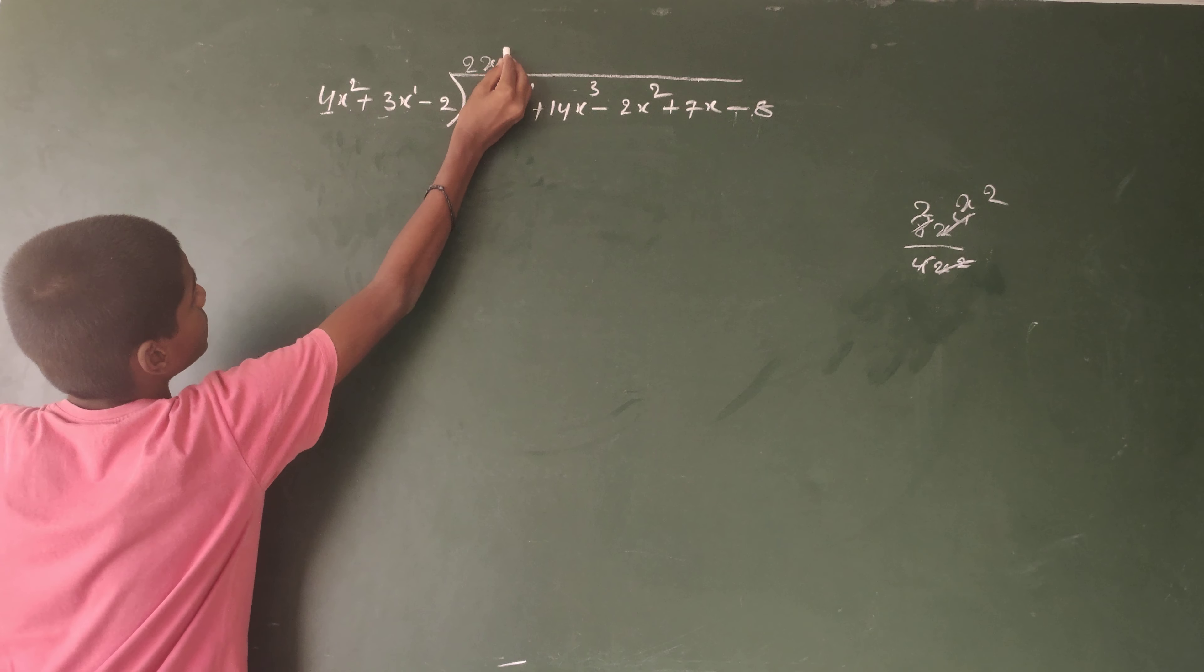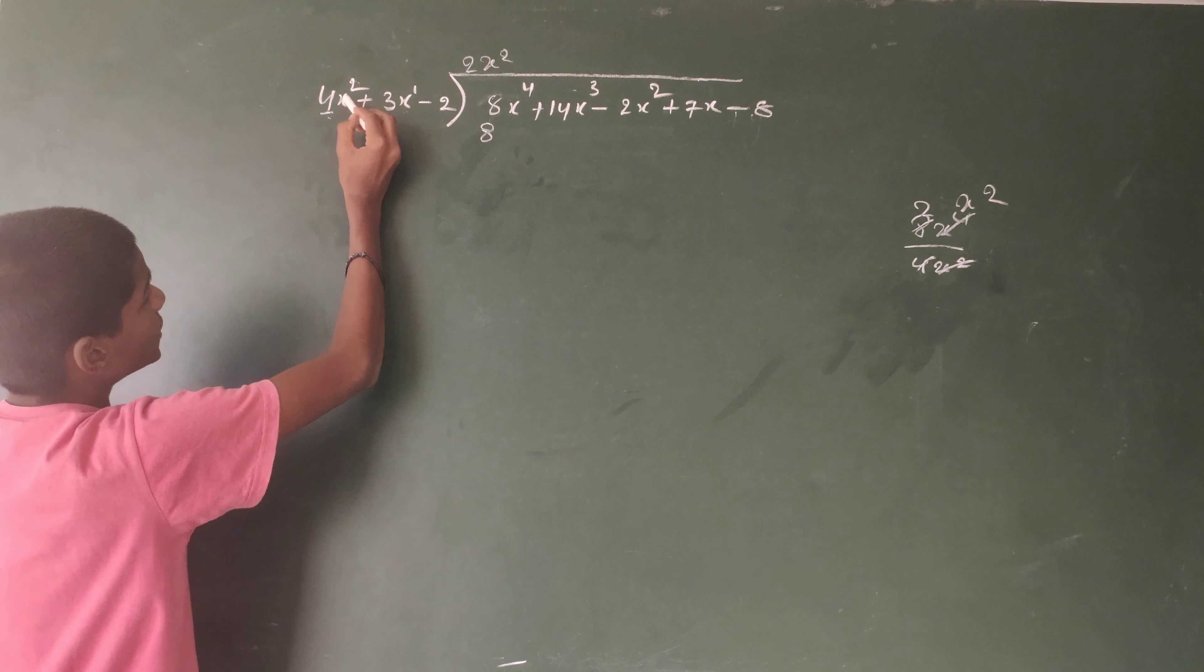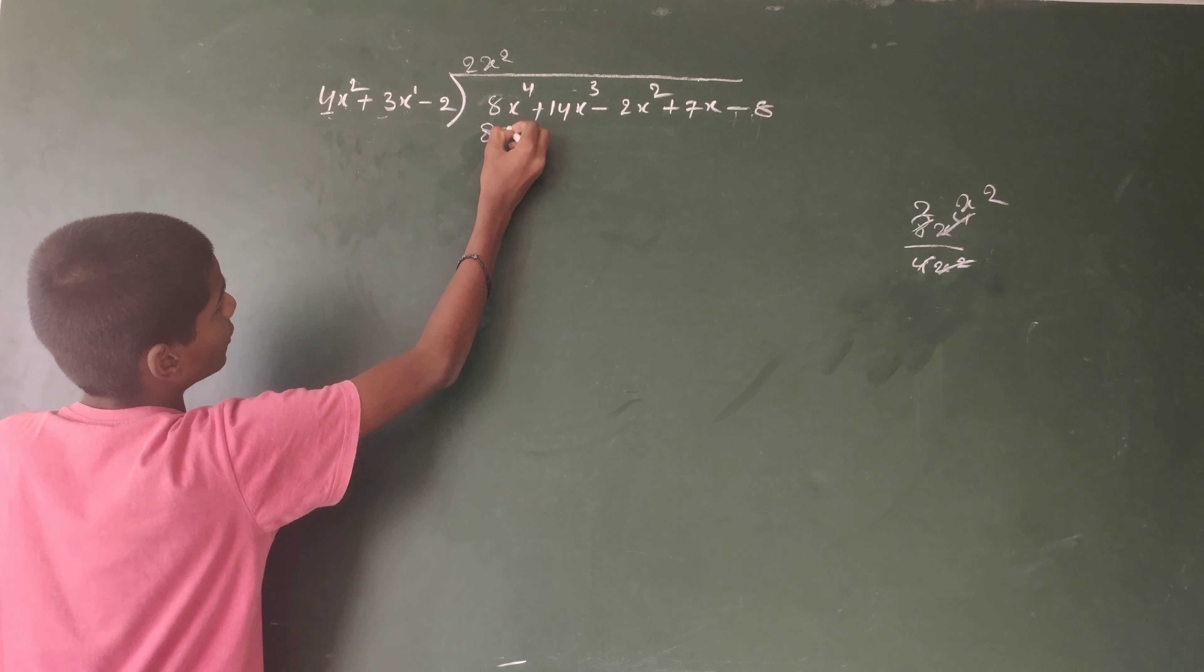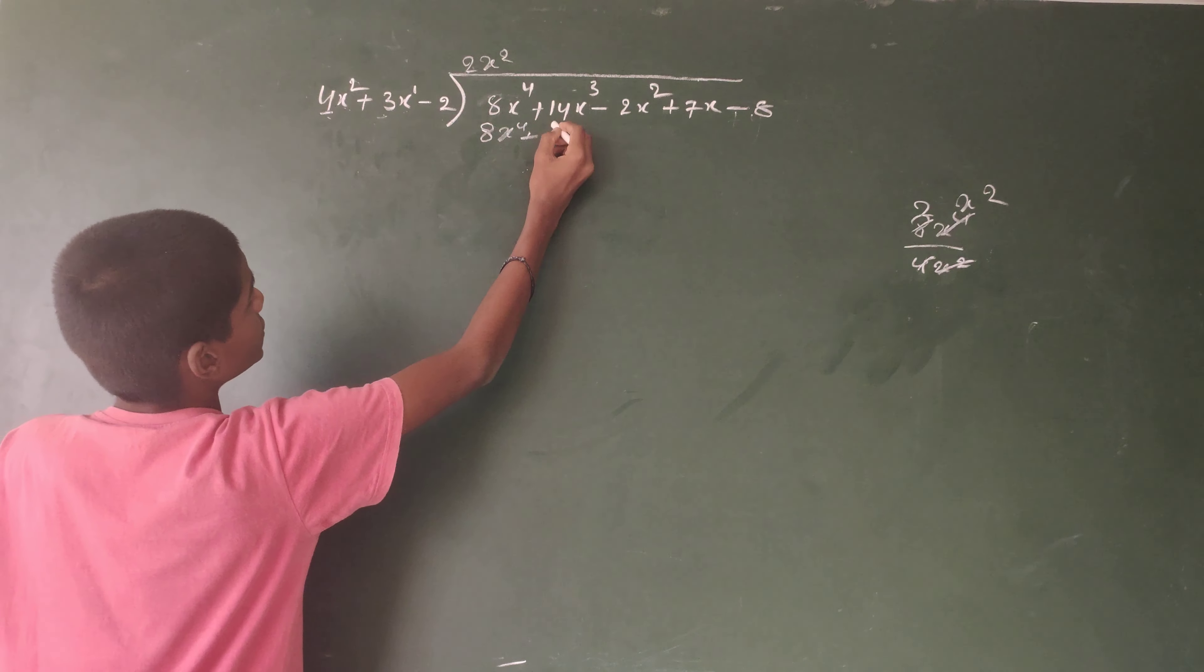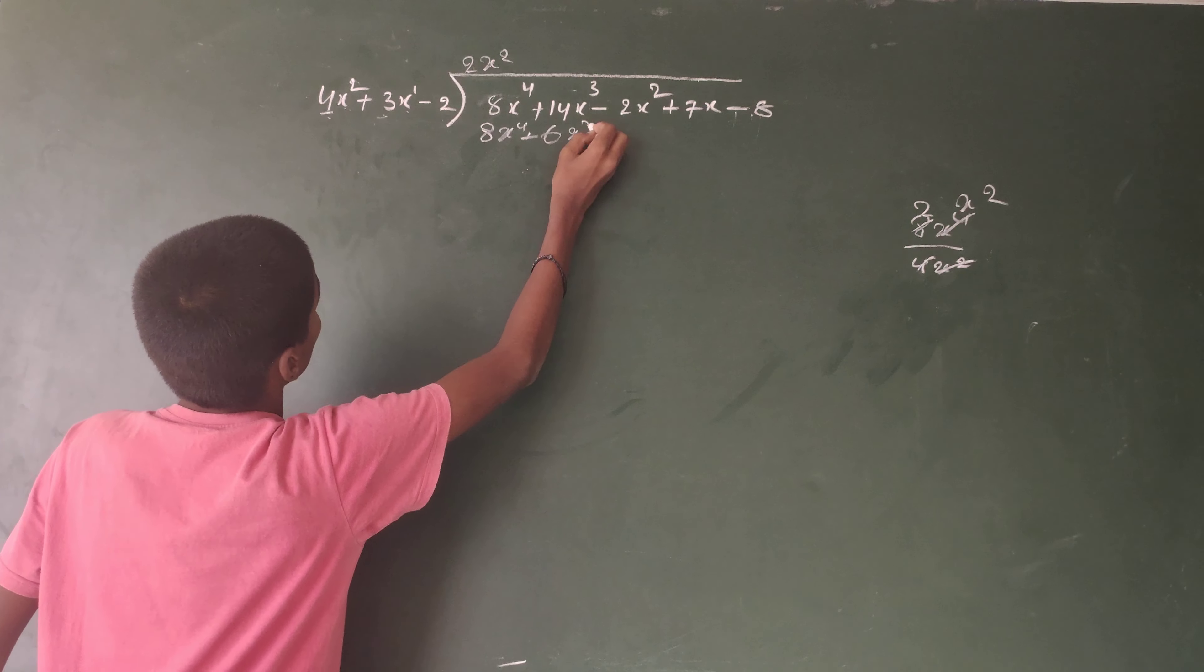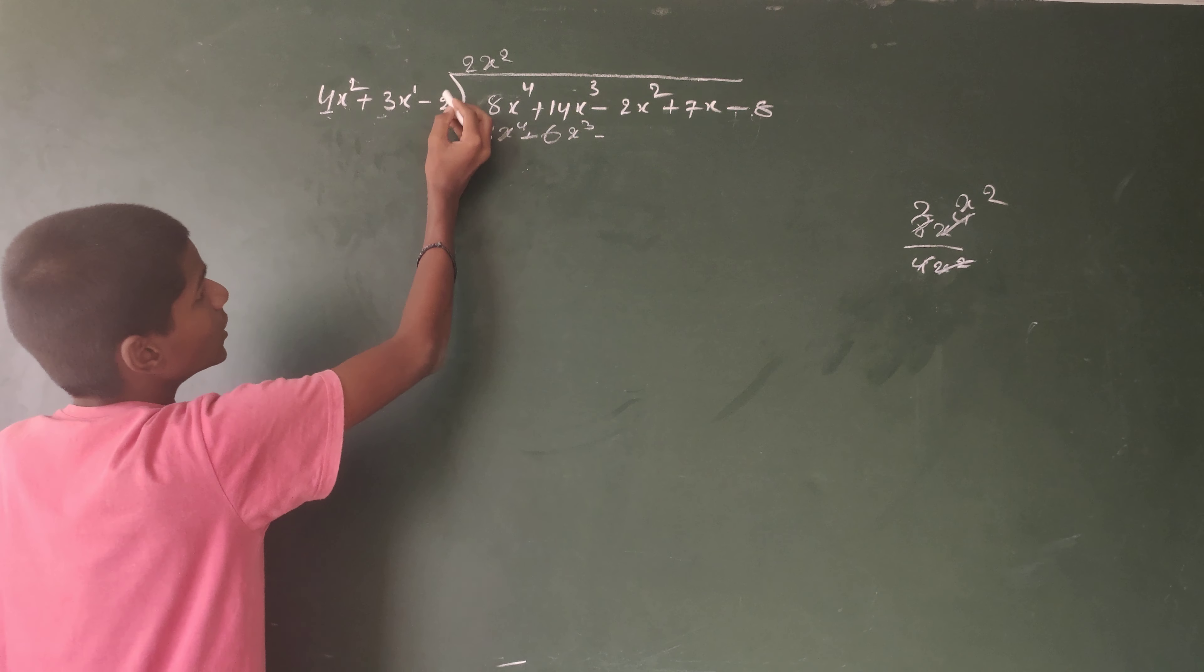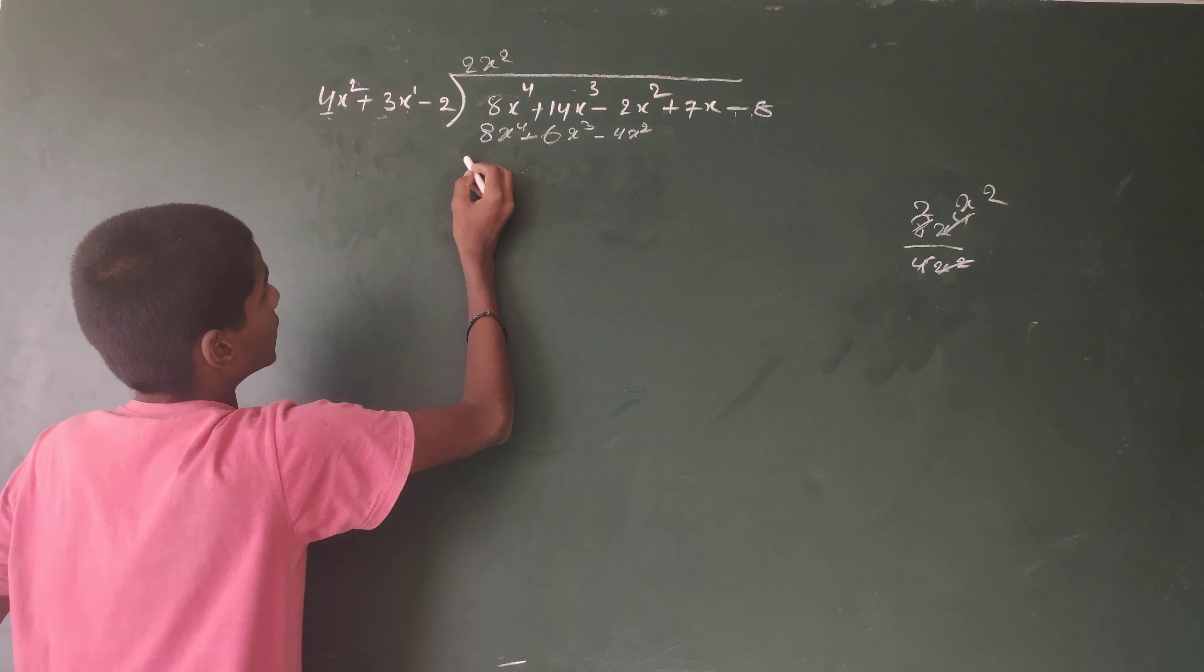2x² times 4 is 8, x² times x² is x⁴. Plus 3 times 2x² is 6x³. Minus 2 times 2x² is 4x². Here symbols change.